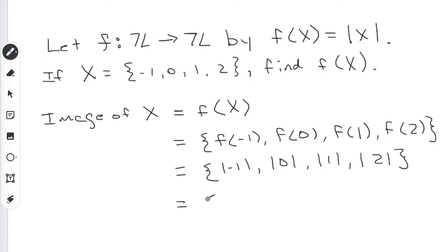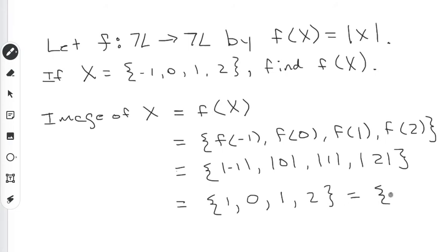Working this out: the absolute value of negative 1 is just positive 1 — that's the distance from negative 1 to 0. The absolute value of 0 is 0. The absolute value of positive 1 is 1, since the number 1 is 1 away from 0. And the absolute value of positive 2 is positive 2, since it is 2 away from 0. So we get the set containing 0, 1, and 2. The 1 gets repeated, so we limit it to showing up only once, giving us the set {0, 1, 2}. That's the image of x.